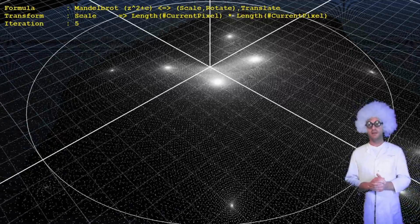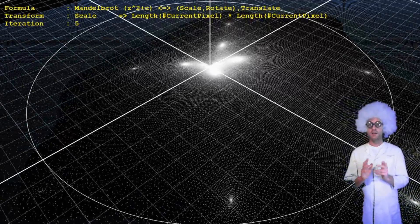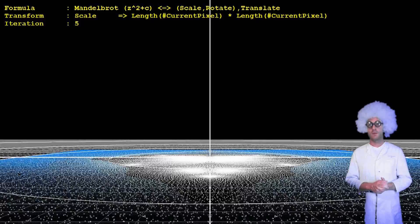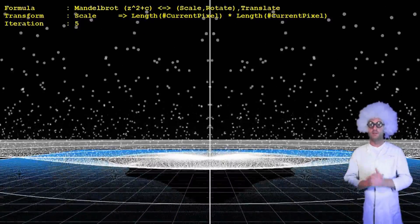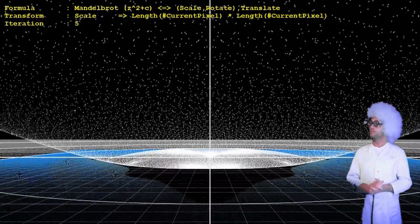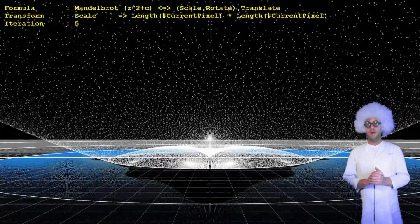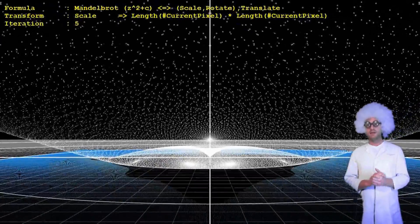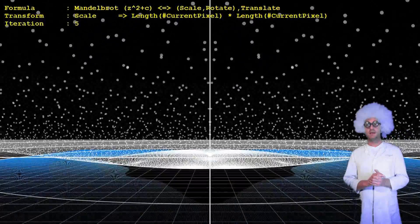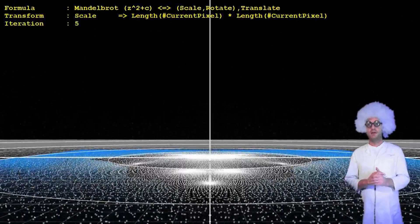Here it is nicely visible that points below one move towards the center and points above one move farther away. The scaling along the unit circle is exactly one, hence these points on the unit circle do not move.